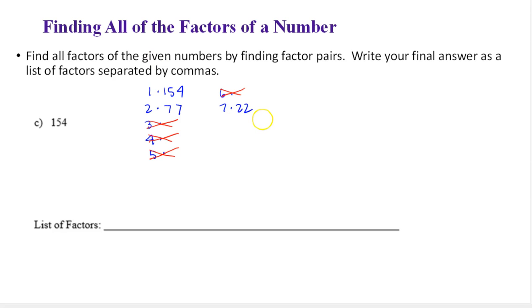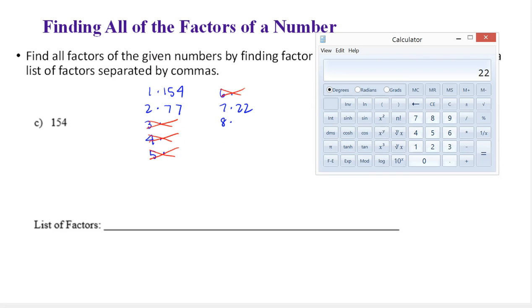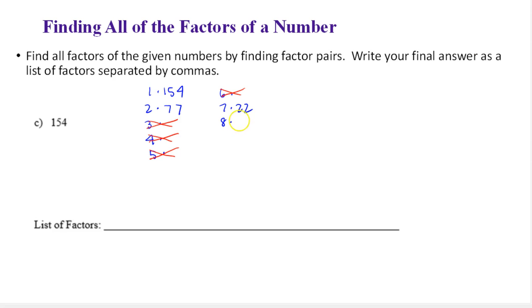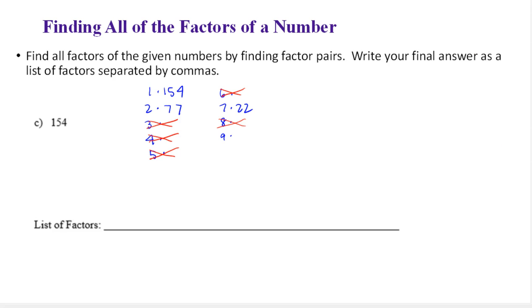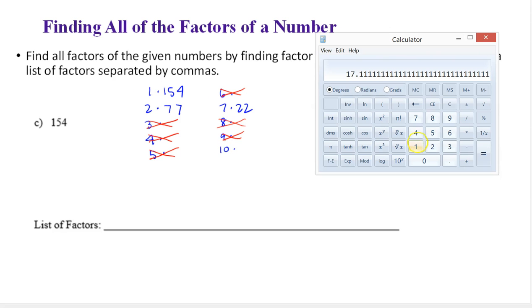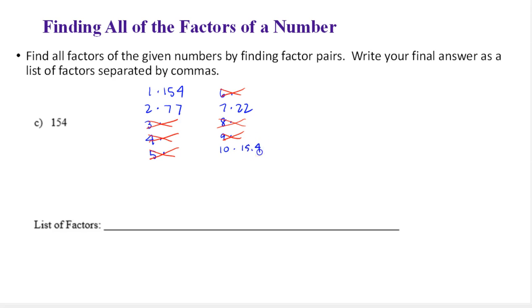We could try 8. I know 8 is not going to work because 4 didn't, but let's try it anyway. It only takes a second. Notice we're up to 19. We still have to keep going. 9. Nope. I know 10 is not going to work because it doesn't end in a 0, but we'll try it. 10, 15.4. We're getting close. I'm going to write that 15.4 just so I could keep track of when these numbers are getting closer.